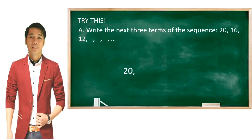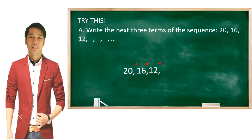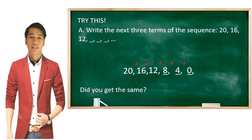Now, please try this one: write the next 3 terms of the sequence 20, 16, 12. You can pause the video to answer. We observe that we are subtracting 4 each time — 20 minus 4 is 16, 16 minus 4 is 12 — so the next three terms are: 12 minus 4 is 8, 8 minus 4 is 4, and 4 minus 4 is 0. Did you get the same?